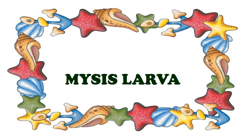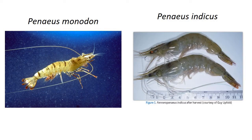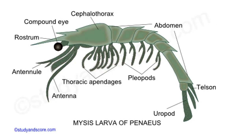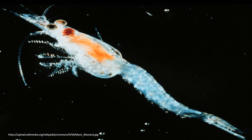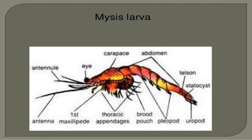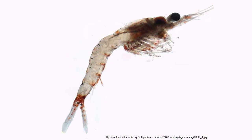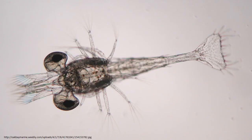Mysis or Schizopod: in penaeid Decapods like Penaeus and Lobster, Zoea get modified into Mysis larvae. It bears 13 pairs of appendages and resembles the adult Mysis. It has five pairs of posterior biramous thoracic appendages. The abdomen is posterior similar to that of the adult, with five pairs of biramous pleopods and a pair of uropods and a telson. In some lobsters, Mysis marks the beginning of the life history as the Nauplius and Zoea are passed within the egg. But at the same time, it marks the end of the life history of a prawn.